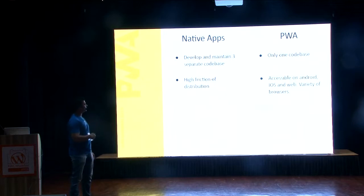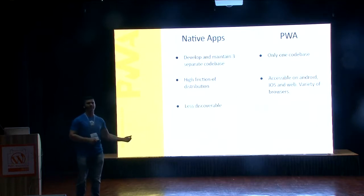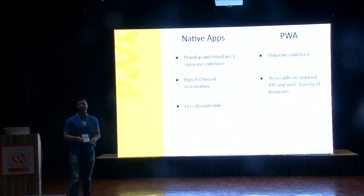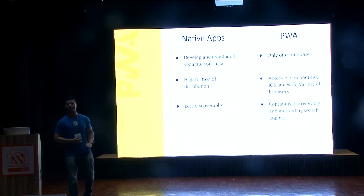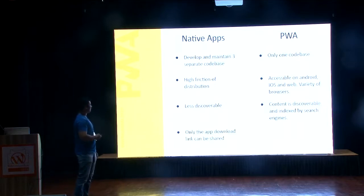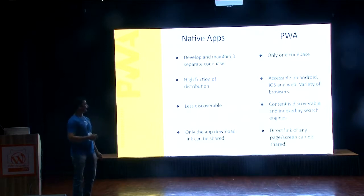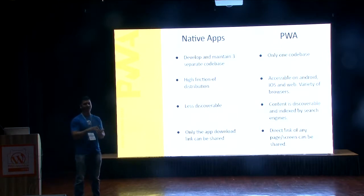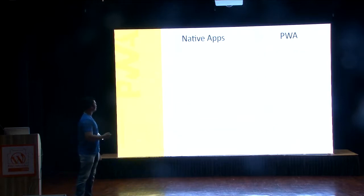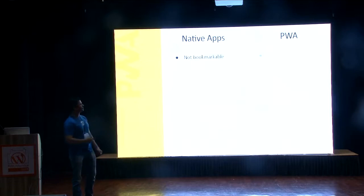In PWA, it's accessible on Android, iOS, web, and a wide variety of browsers. Native apps are less discoverable — they won't be indexed by Google since they're on the Play Store. But because PWAs are web apps, the content is discoverable and indexed by search engines, which is good for your client. With native apps, only the app download link can be shared; however, in progressive web apps, you have a direct link to the page or screen that can be shared. And progressive web apps are bookmarkable.